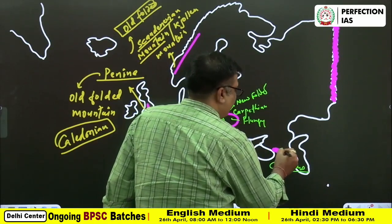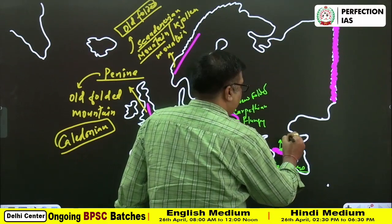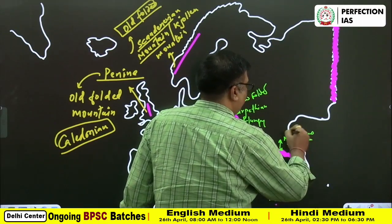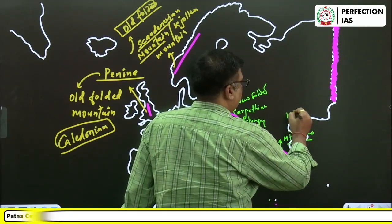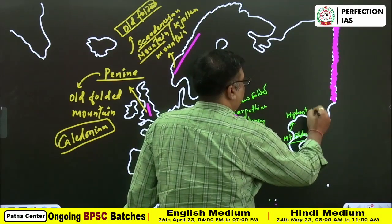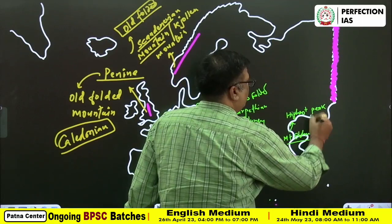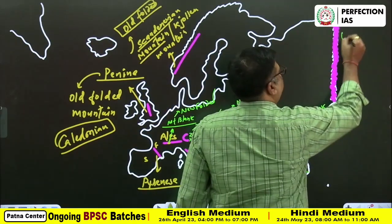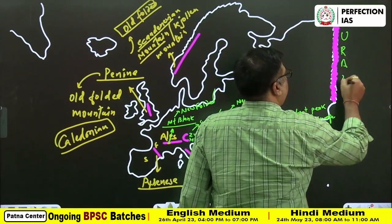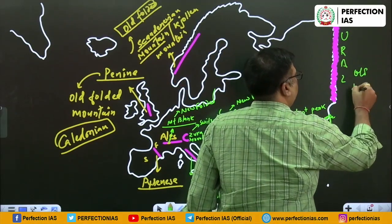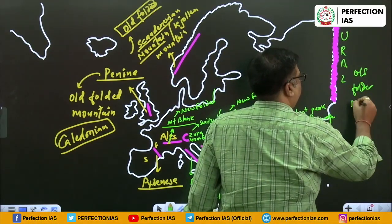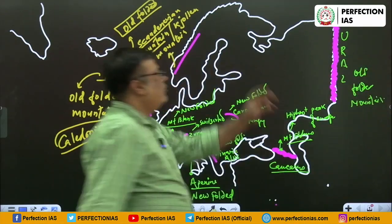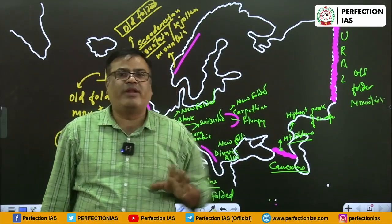Now here it is the Caucasus. Caucasus has the highest peak - its name is Mount Elbrus. Mount Elbrus is the highest peak of Europe. And finally here it is the Ural, and that is old folded mountain. Your job is done - this is the complete mountain section.